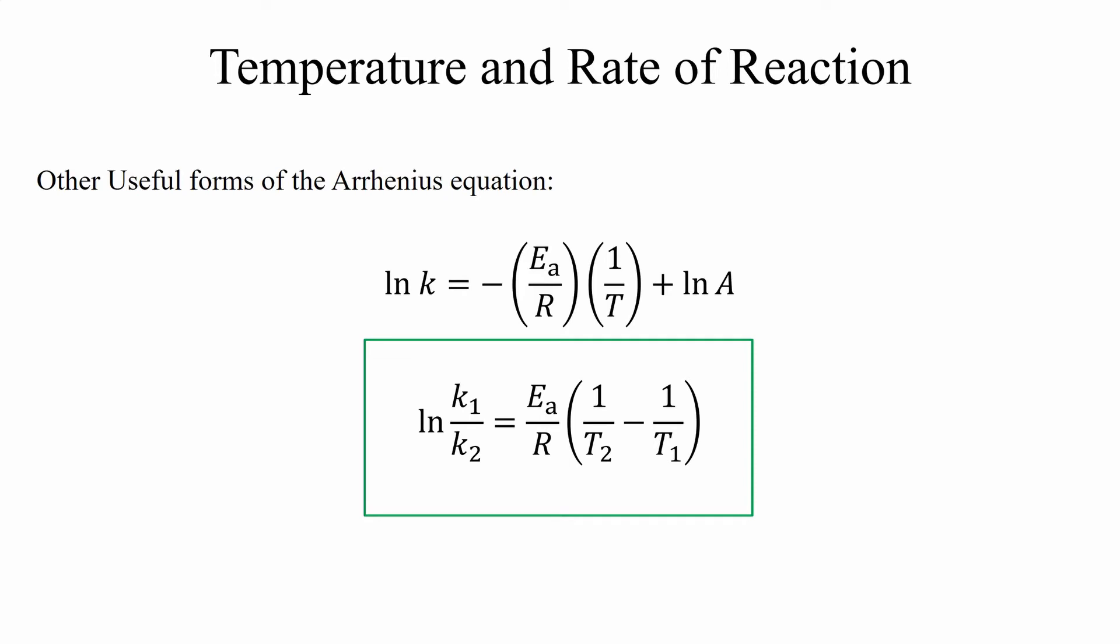Now the one above, we can use that for graphing. That's very useful in lab. However, in the classroom, the two-rate constant two-temperature form is actually most useful.